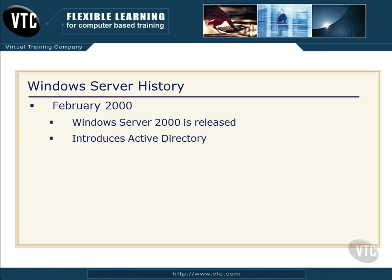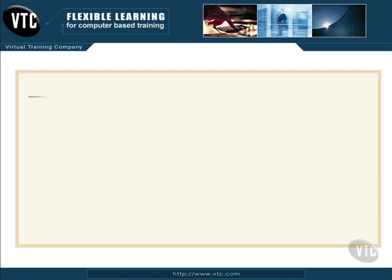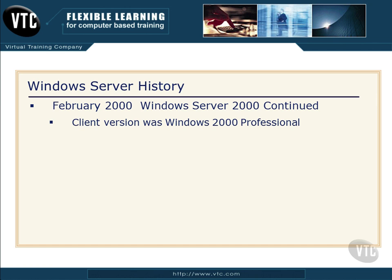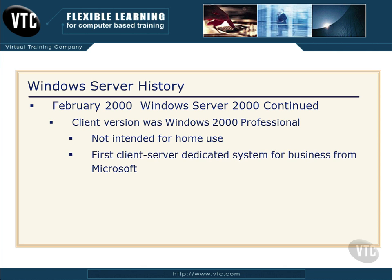Windows Server 2000 introduced Active Directory and really beefed up the inclusion of industry standards in Microsoft's server products — things like DNS, LDAP (Lightweight Directory Access Protocol), and Kerberos for security. Microsoft also released for the first time a dedicated client version for the server: Windows 2000 Professional. This was not intended for home use — it was the first dedicated client-server system for business from Microsoft. That's roughly 12 to 13 years ago, and a lot has happened since then.